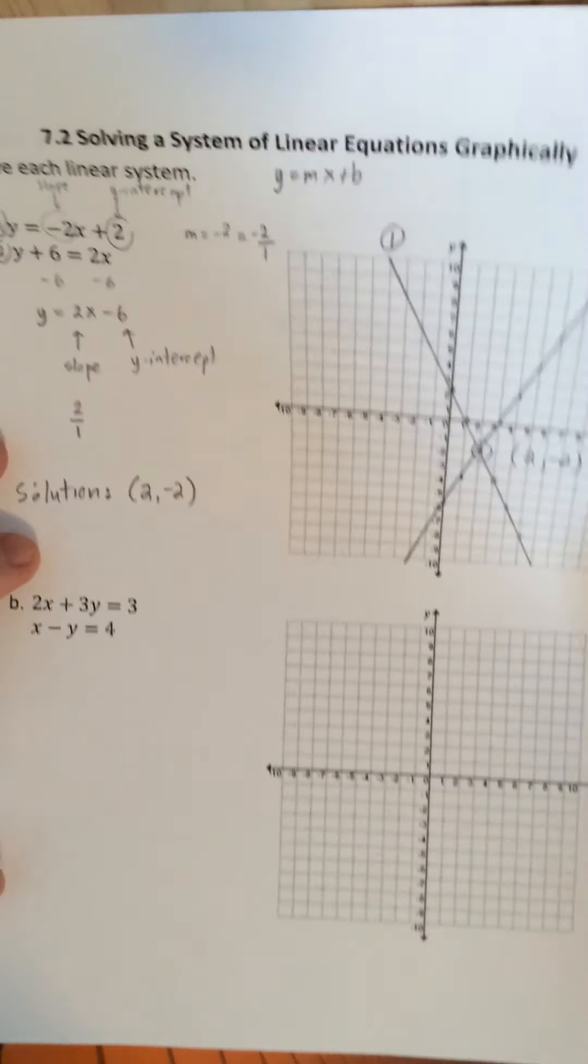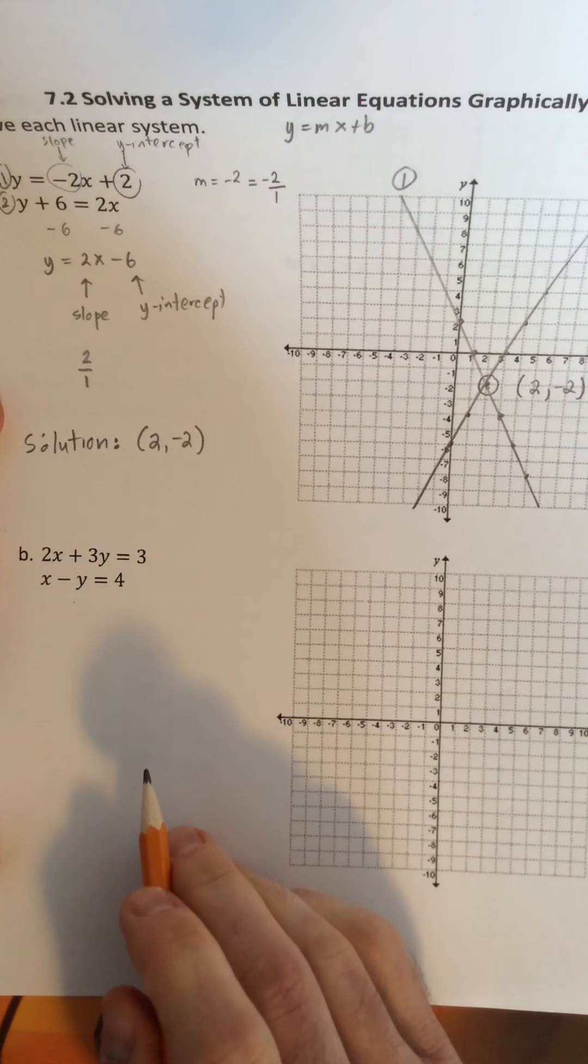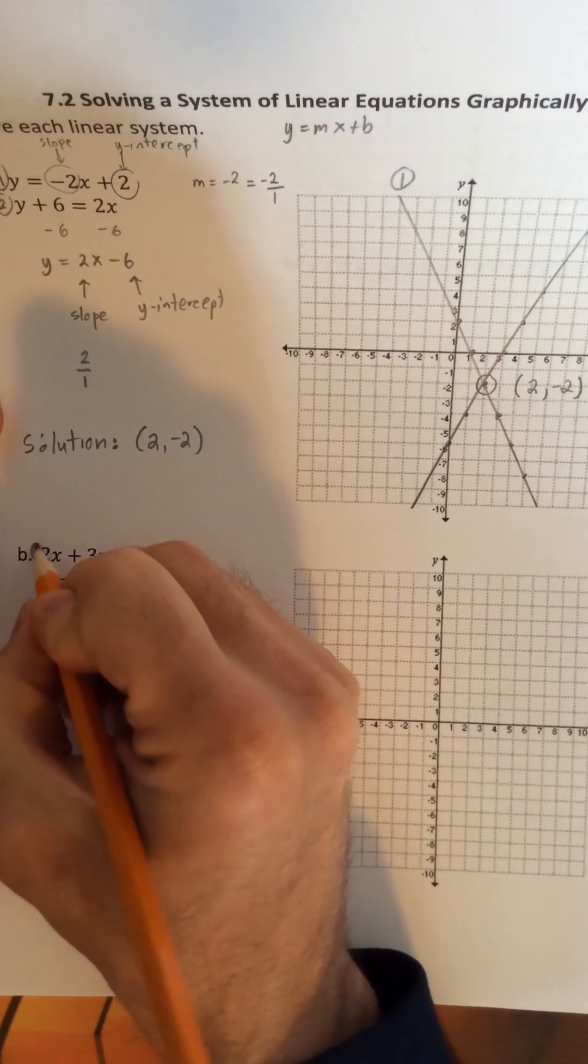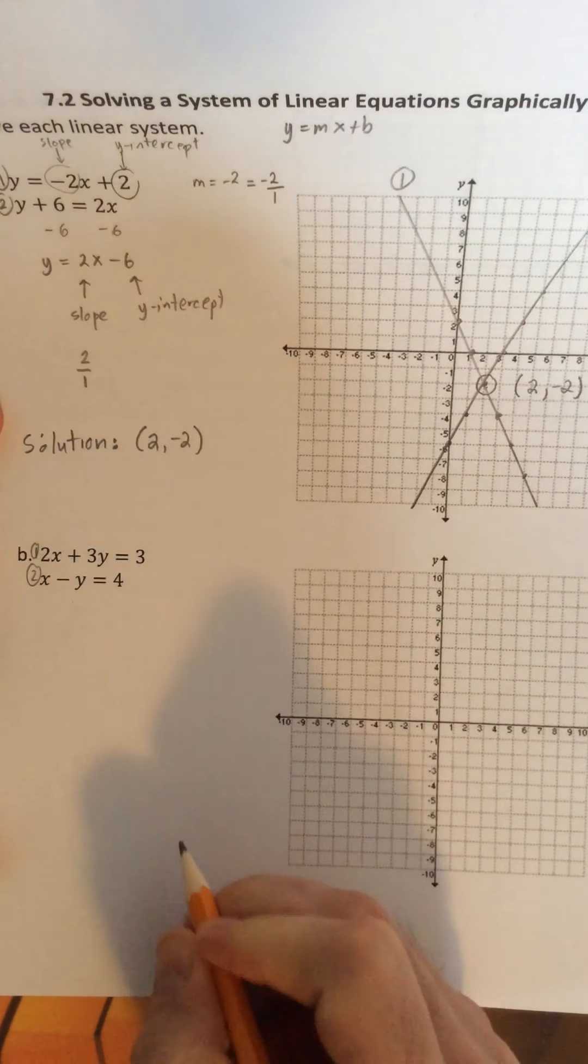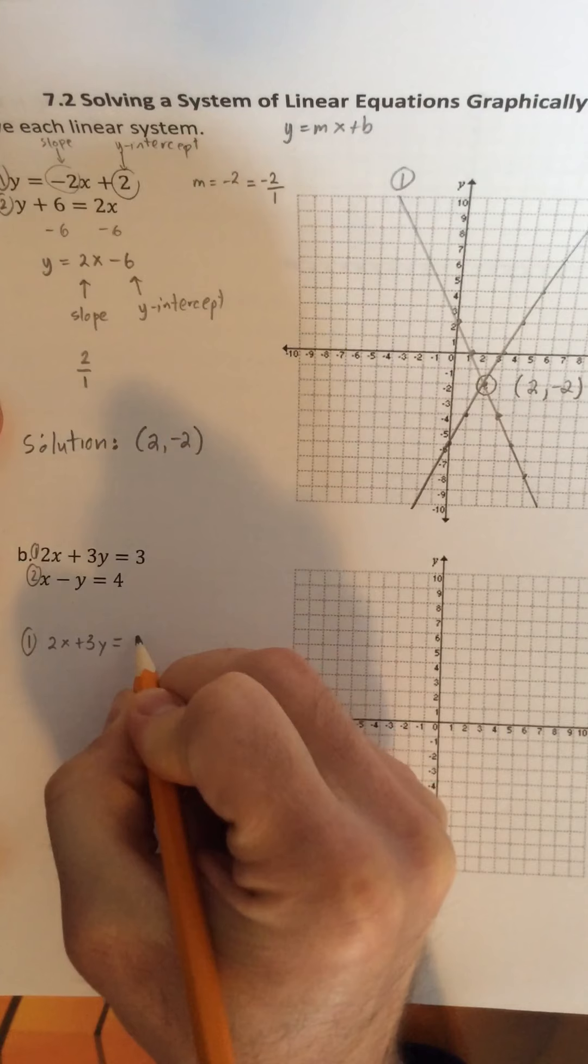Now if we look at a second example here, neither of these equations are rearranged so that they're in slope intercept form. So I'm going to take each of these equations and rearrange them. So I'll start with equation 1. 2x plus 3y equals 3.